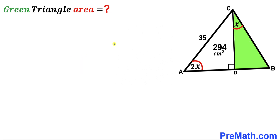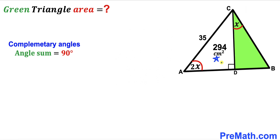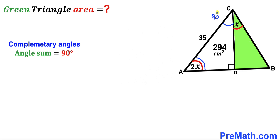Let's focus on the white right triangle. This is a 90-degree angle, so the other two angles are complementary — their sum equals 90 degrees. Therefore, if this angle is 2x, then the other angle has got to be 90 degrees minus 2x.